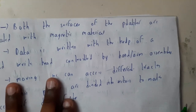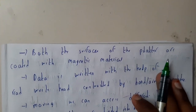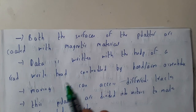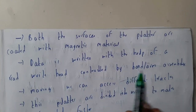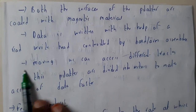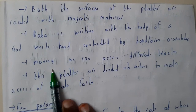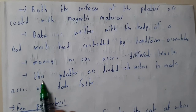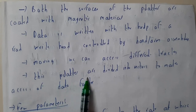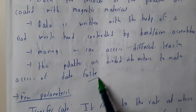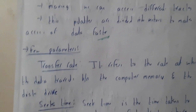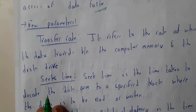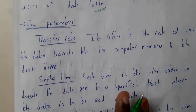Both surfaces of the platter are coated with magnetic material. Data is read and written with the help of a read/write head, controlled by the arm assembler. By moving the arm, we can access different tracks. The platters are divided into sectors to make accessing faster. These concepts are important for understanding disk scheduling.